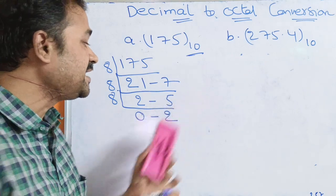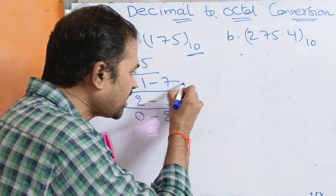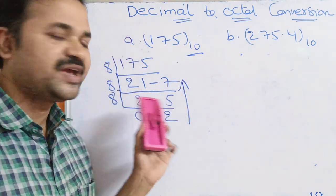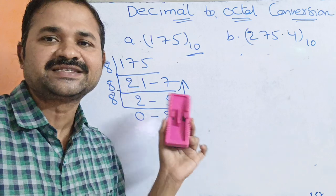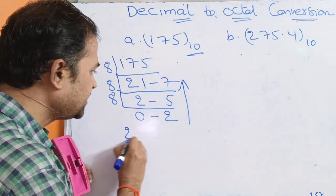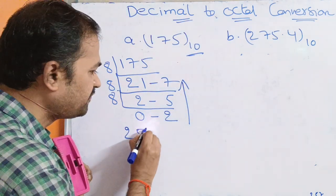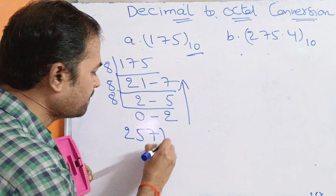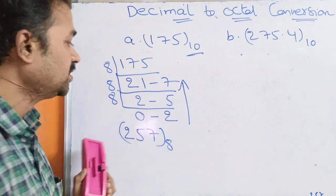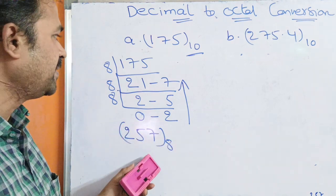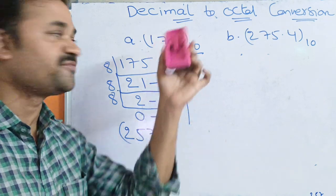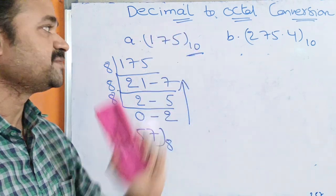The resultant octal number must be read from bottom to top. So reading the remainders from bottom to top gives us 257 in octal. This is the corresponding octal number for the decimal number 175.